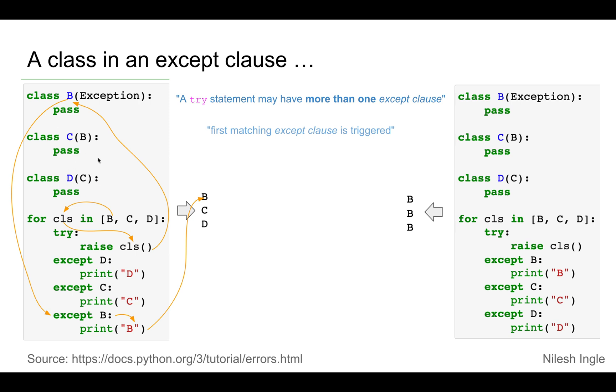For example, on the left here, we have class D, which, let's say D is an error, just as we saw there is a type error. Let's say D is a name of an error and here we have class D that is using class C.